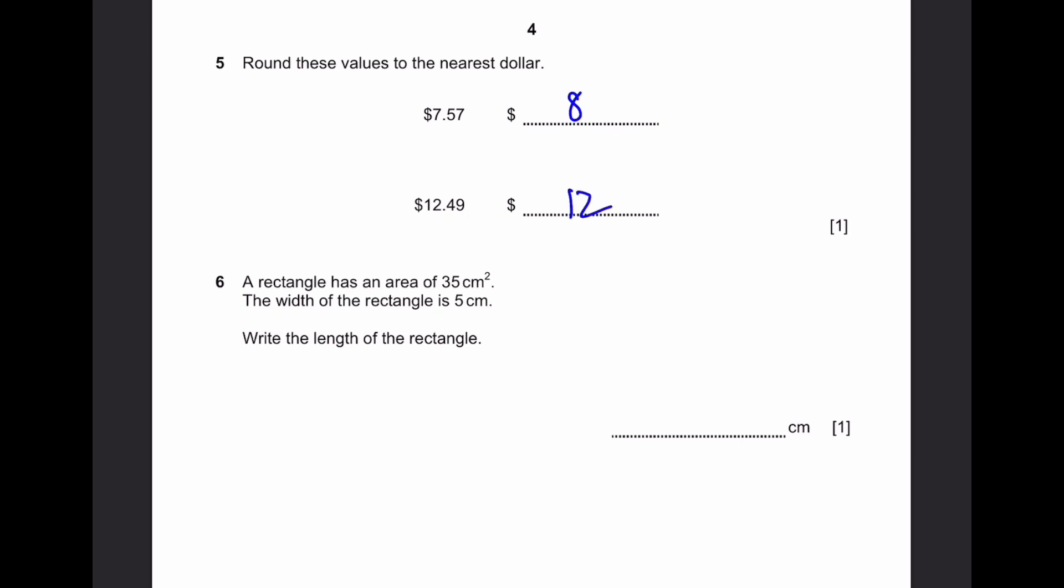Question 6. A rectangle has an area of 35 centimeters squared. The width is 5 centimeters. Write the length. 35 by 5. And that's equal to 7 centimeters. Because when you take 7 into 5, that's the area, and that's 35. That's the answer.